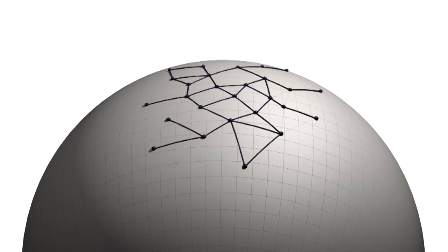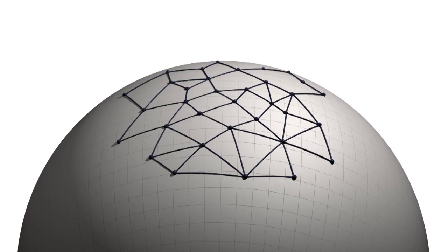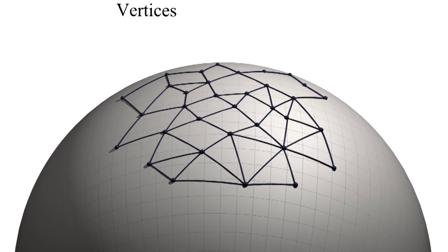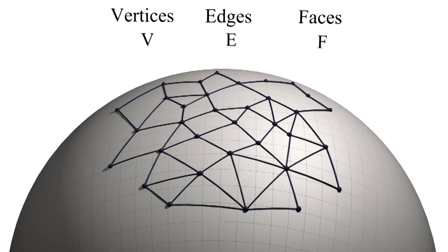Imagine we have a sphere, and on this sphere we draw a set of connected edges and count the number of vertices, edges, and faces. After we count, we find that the number of vertices is V, the number of edges is E, and the number of faces is F.